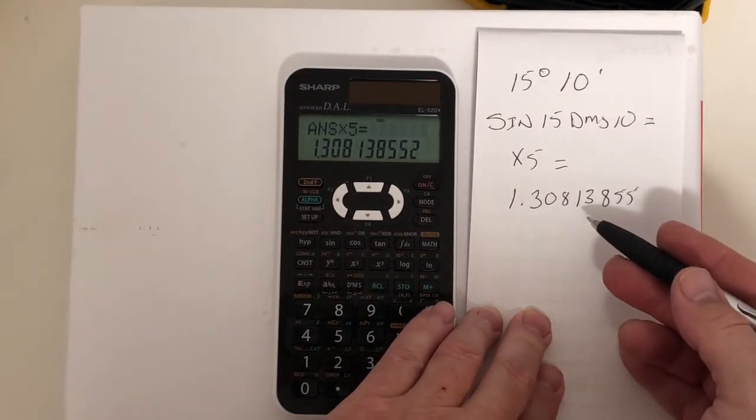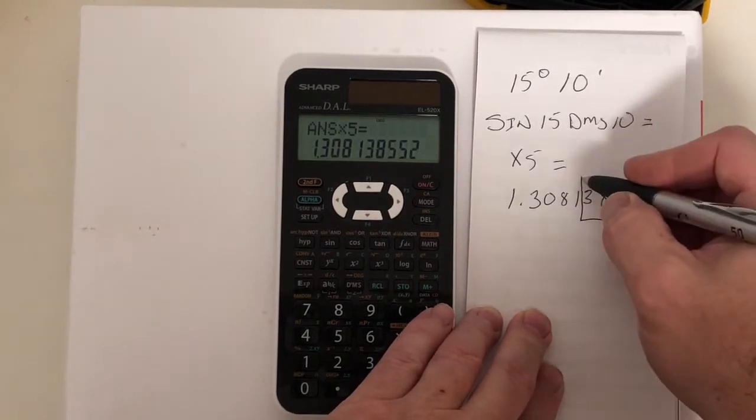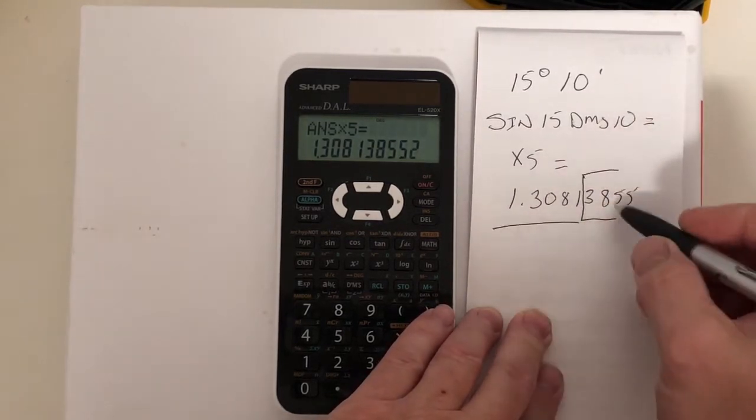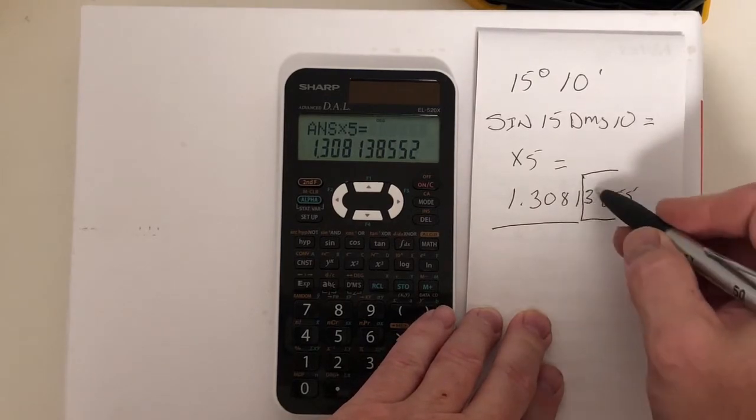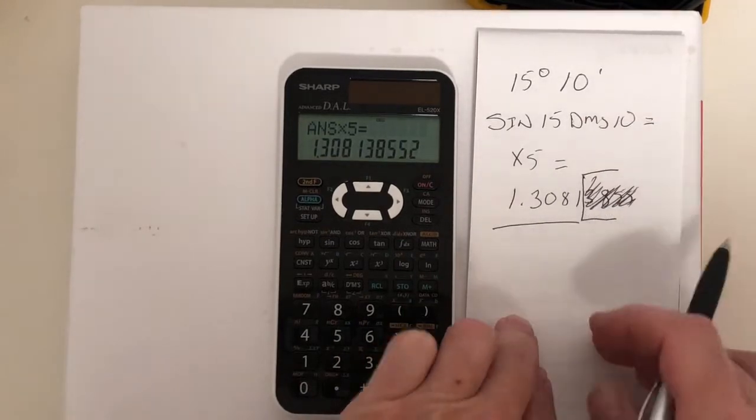1.30813855. Now with gauge blocks, we can only go to the 10th, which is this number here. We can only use this number here. Because this is less than five, we'll just pretend that doesn't exist. If it was greater than five, we would have made that into a two.